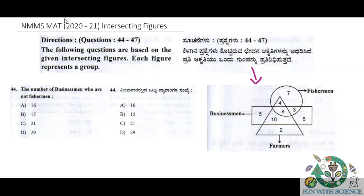Each figure is going to represent a group. Here is the circle — the fisherman represents the circle, the rectangle represents the businessman, and the triangle represents the farmers. The figures are intersecting each other.